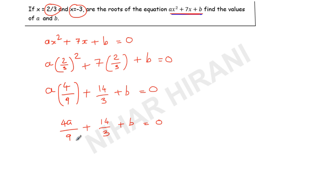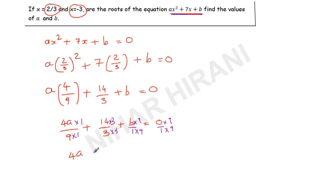Now I do not want the denominator, so I will take the LCM of the whole equation. LCM of 3 and 9 is 9. Multiplying through by 9: 9 times 4a/9 gives 4a, 3 times 14/3 gives 42, and 9 times b gives 9b. So this becomes 4a + 42 + 9b = 0, and this is equation number 1.